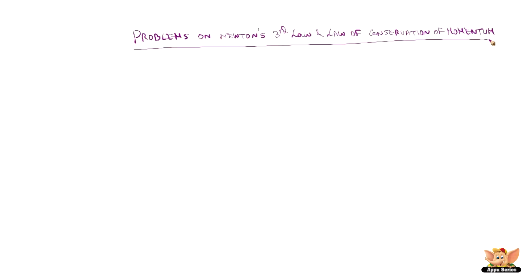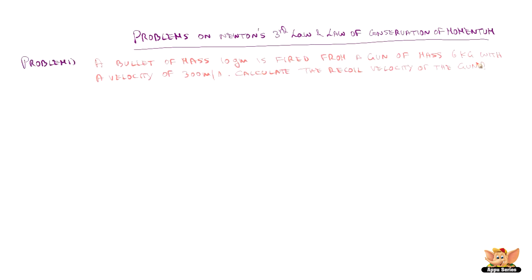Problems on the third law of motion and law of conservation of momentum. Problem 1: A bullet of mass 10 grams is fired from a gun of mass 6 kg with a velocity of 300 meters per second. Calculate the recoil velocity of the gun.